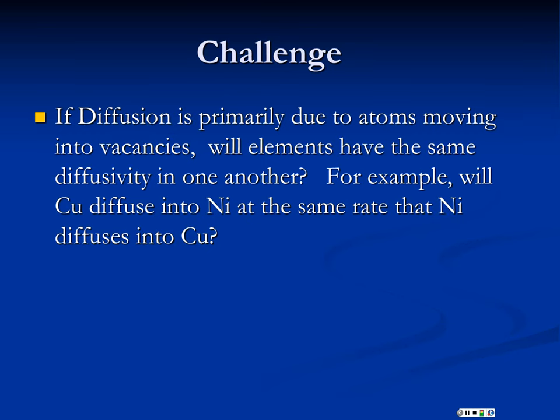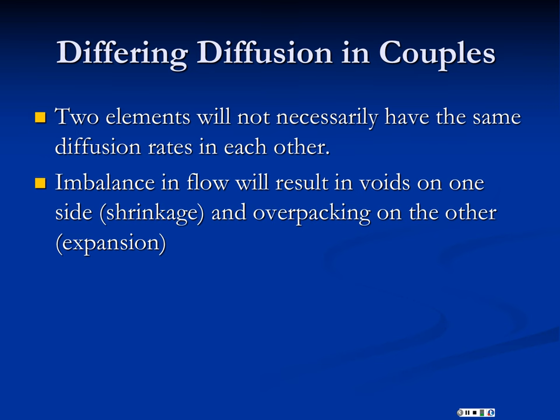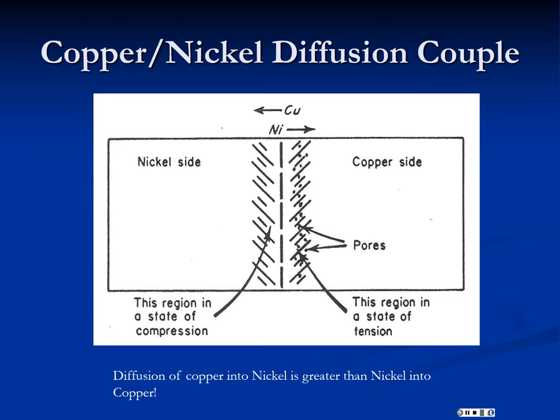Now, because diffusion is primarily due to atoms moving to vacancies, would it be logical for elements to have the same diffusivity in one another? That is, will the ease of copper diffusing into nickel be the same as the ease of nickel diffusing into copper? If you just think back to the solubility rules, they don't have to be the same size. So if one of them is a little smaller, it's obvious it's going to diffuse more easily into the other than the large atoms diffusing into a small host. Also, because they don't have the same melting temperatures, probably don't have the same energy barrier for vacancy formation. At a given temperature they're going to have different numbers of vacancies. And he who has more vacancies gets more diffusion. So we don't expect diffusion to be the same for two materials. And what that creates is if I have two metals coupled and they don't have the same diffusion rates, they're going to get imbalanced flow. So one side is going to get more atoms than it sends the other way. And that produces an interesting result.